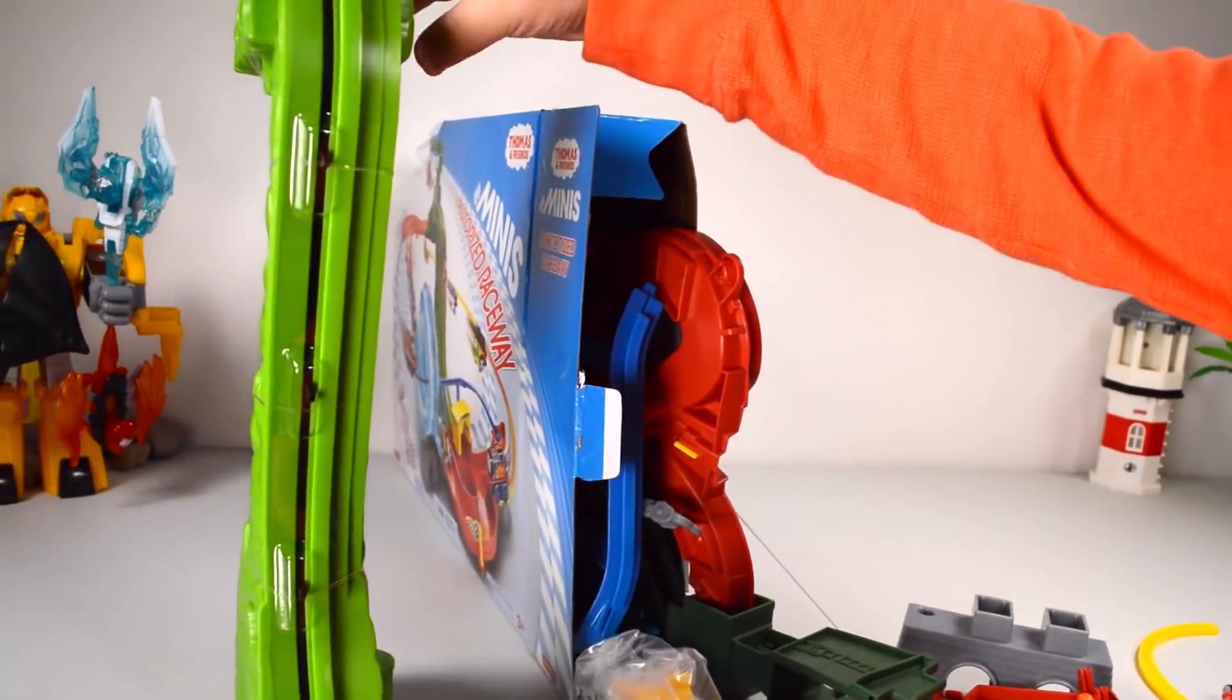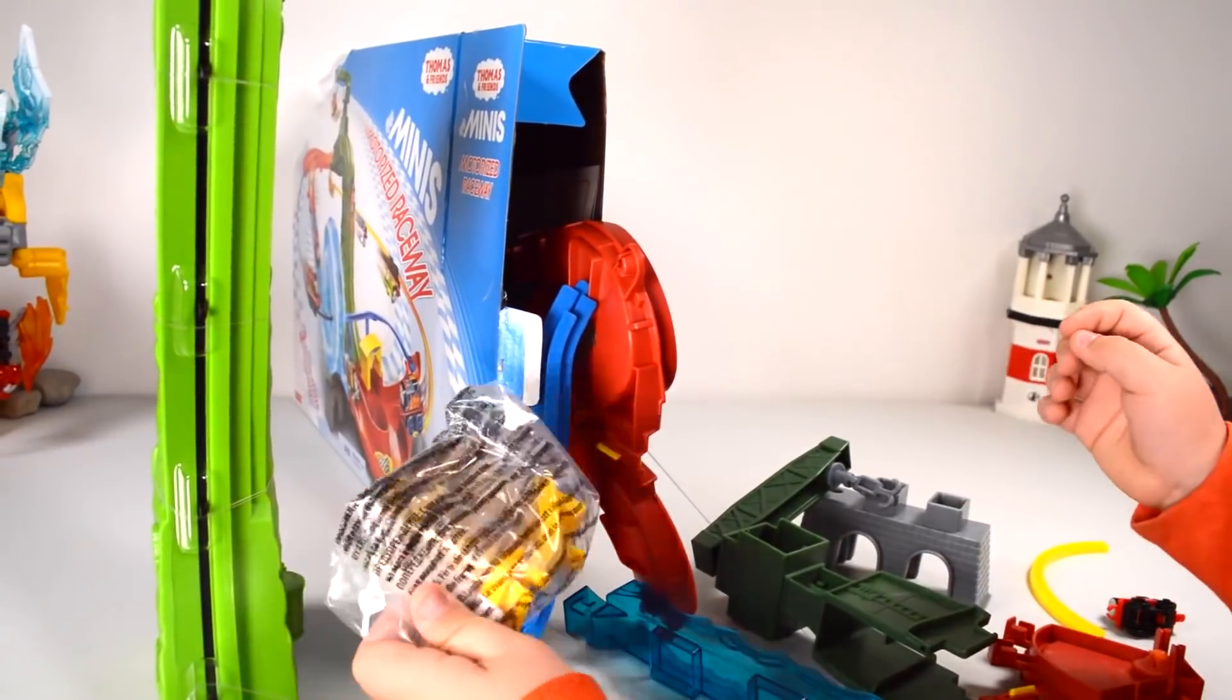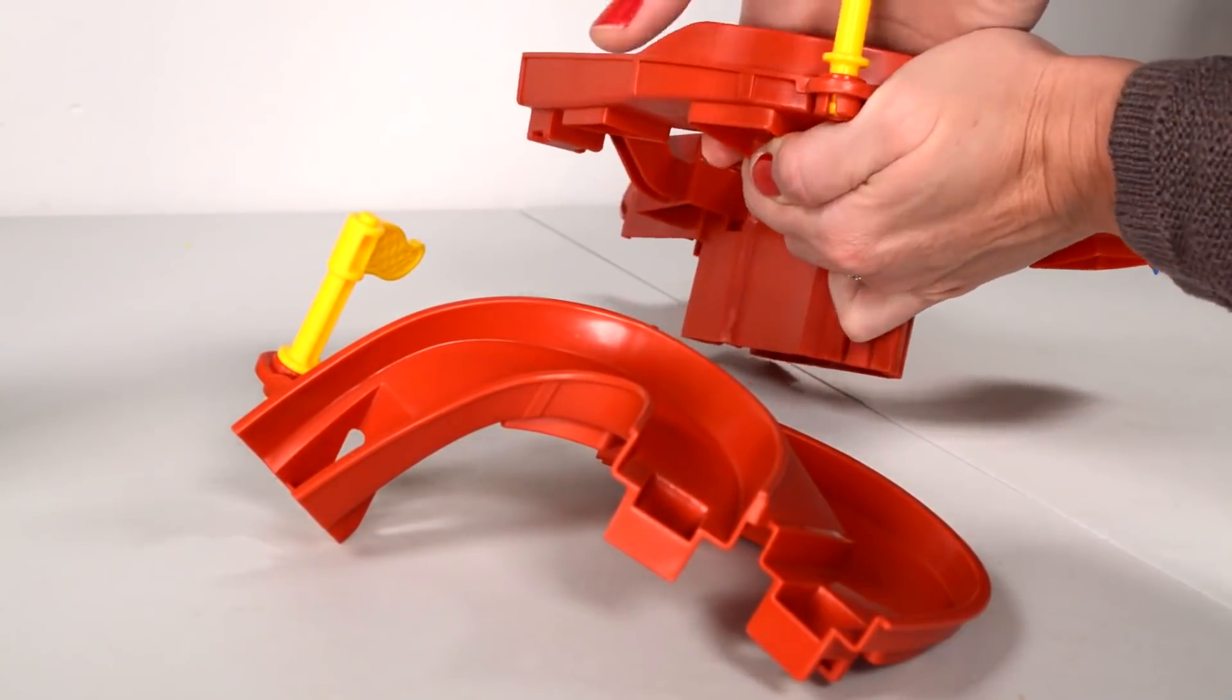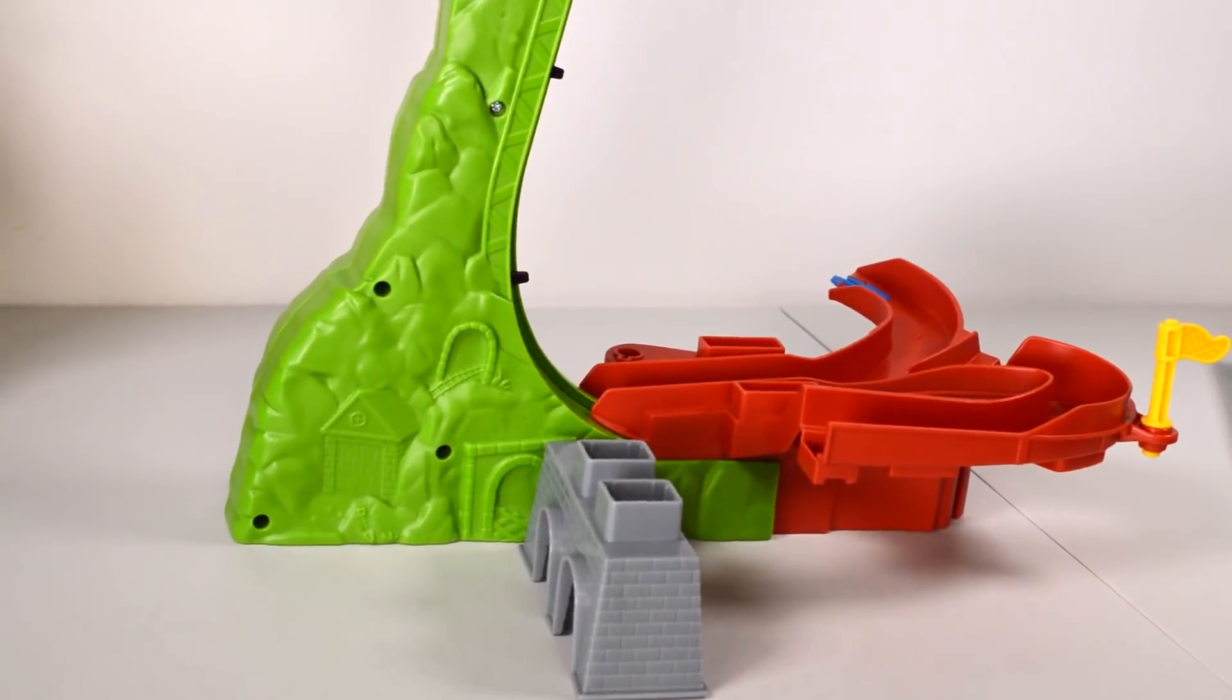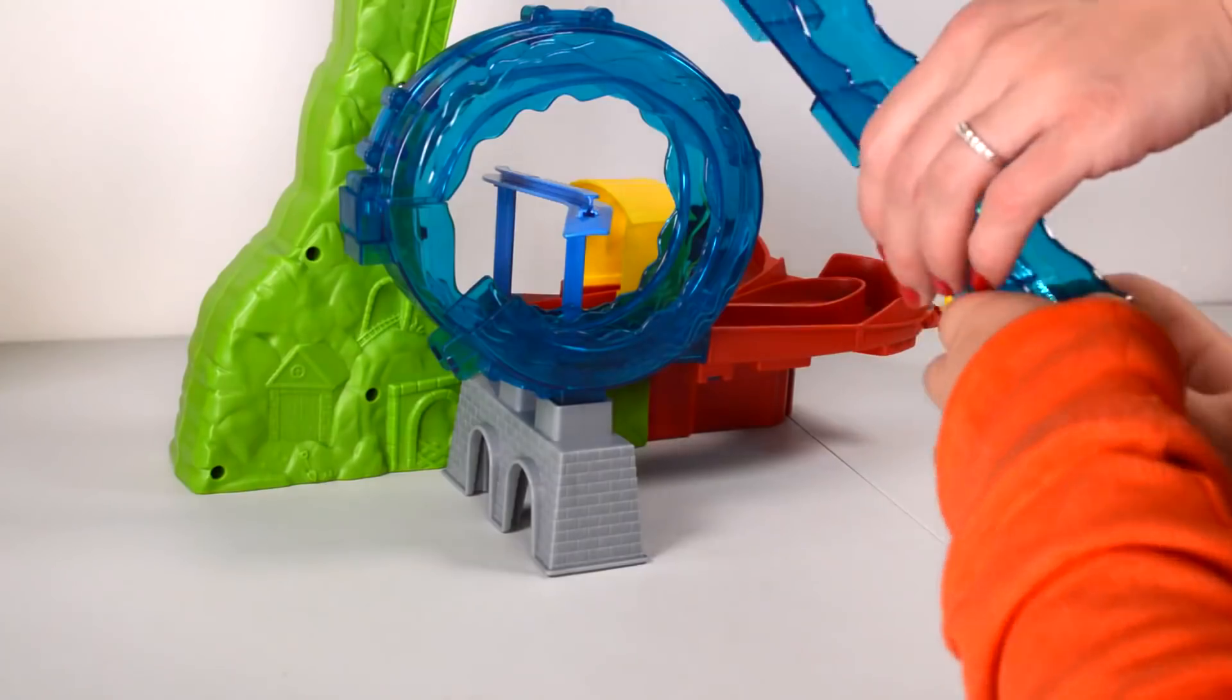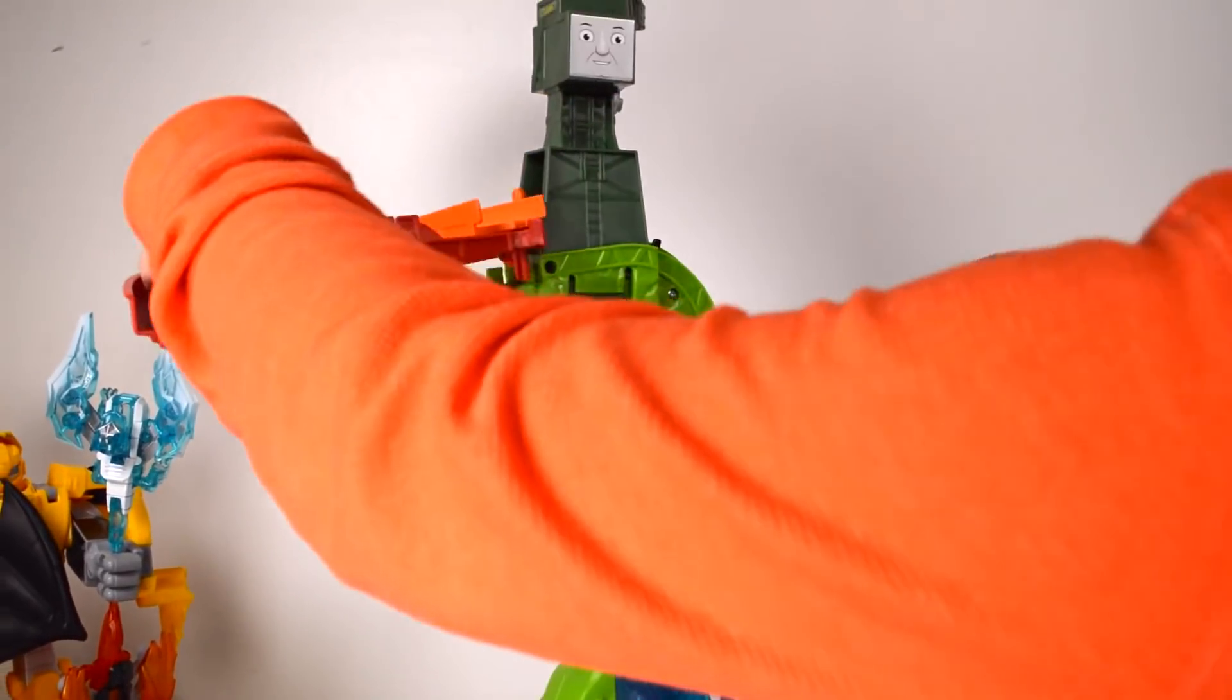You guys should check that out we did the super station we reviewed it and that's huge. This is Thomas and James train so tiny and cute they're like little babies. They are babies. Are they in diapers? No they're in wheels. Now let's open this up. Let's set this up.